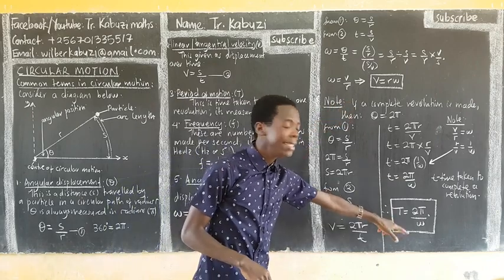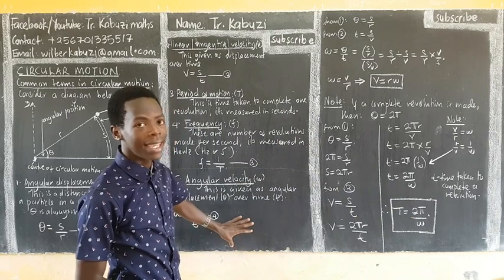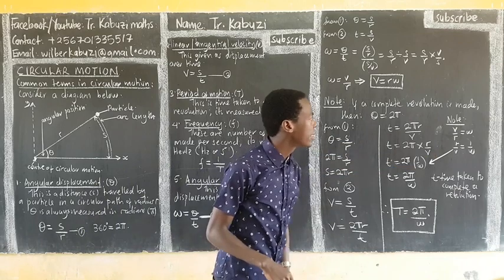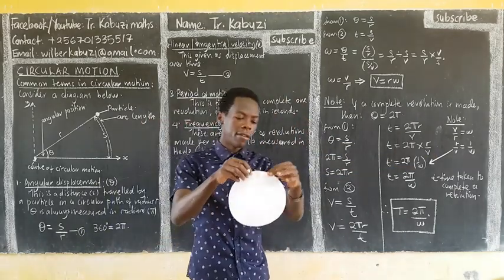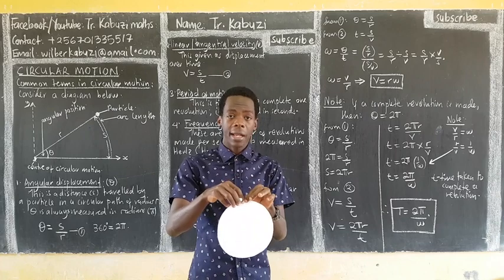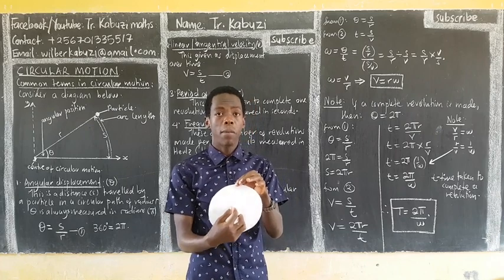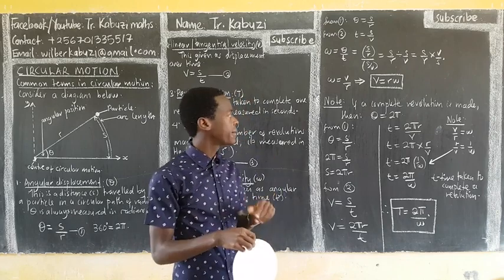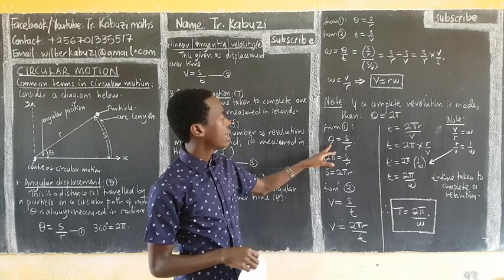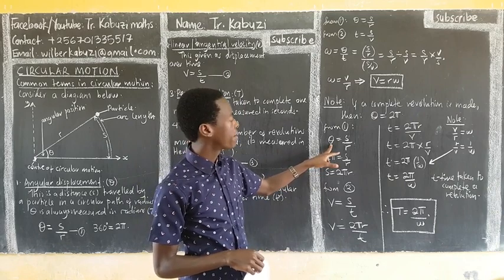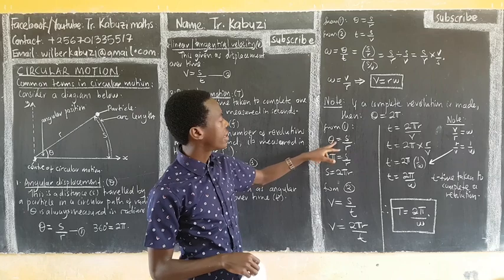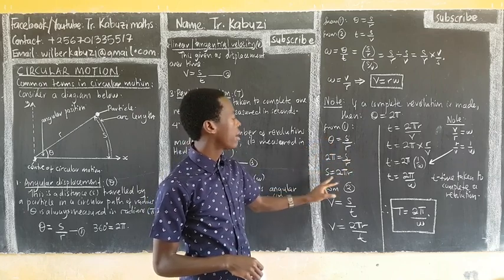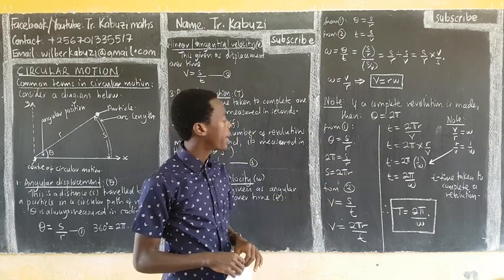Now for the longer method: if a complete revolution is made, the angular displacement is 2π radians, or 360 degrees, since one revolution equals 360 degrees. From equation one, angular displacement equals S over R, so if theta equals 2π, multiplying both sides by R gives the displacement S equals 2πR, which is the circumference of the circle.